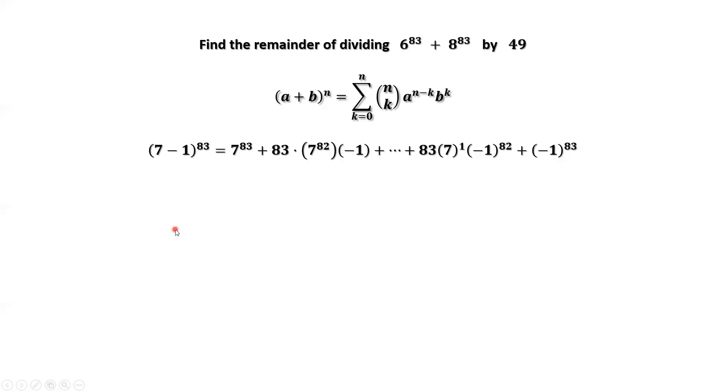Similarly, we can apply this binomial formula to the second term, 7 plus 1 to the power of 83. These two look similar except negative 1 and positive 1.